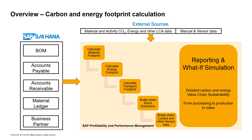Data from accounts payable and accounts receivable, material accounting, as well as master and hierarchy data are used to track the flow of materials and activities from purchasing through production to sales and delivery to the customer. External life cycle assessment data, sensor data, and manual entries complete the database, on the basis of which the carbon and energy calculation and allocation per product and production step is carried out.